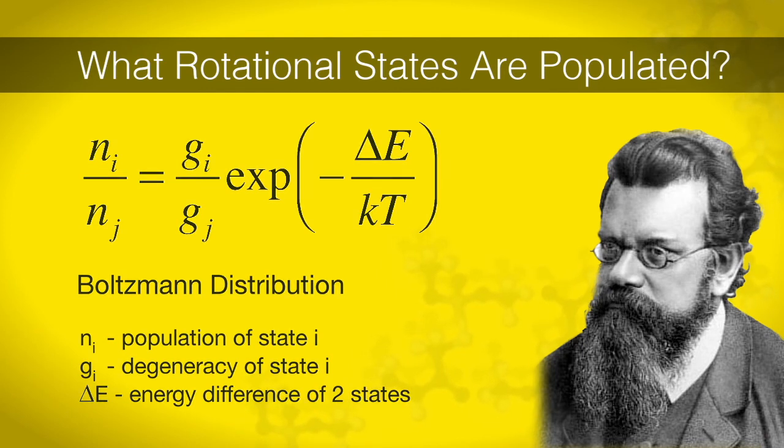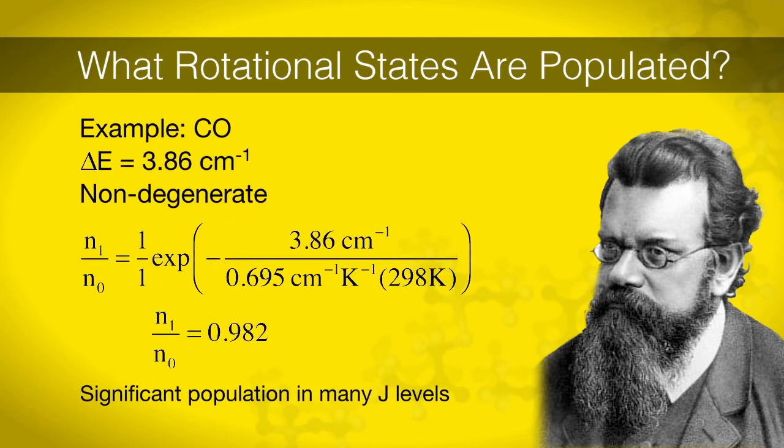Again, let's use carbon monoxide as an example. In carbon monoxide, the ground and first excited rotational states are separated by 3.86 wavenumbers. From this, we find a ratio of 0.982. This means the population of these two states are very similar, and we should expect to see multiple J levels as starting points for transitions.